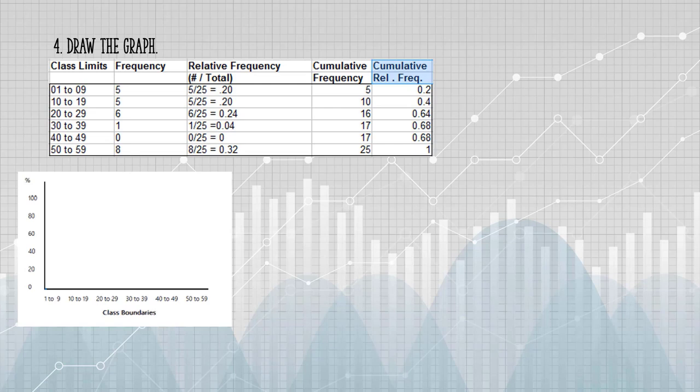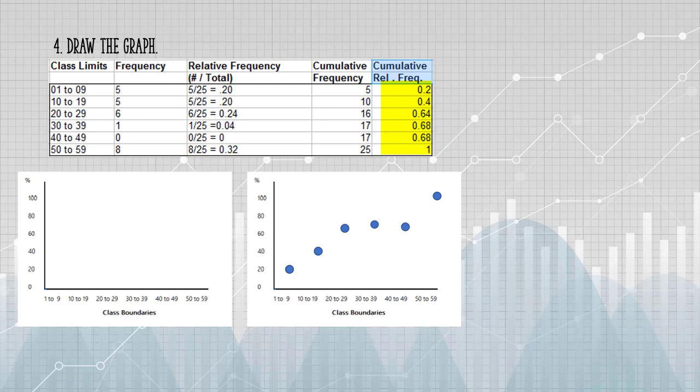Now I can plot my points. I'm plotting my cumulative relative frequencies. Each point should be plotted on the upper limit of the class boundary. For example, my first class boundary is 1 to 9, so my point is going to be placed at 9. If we were drawing a histogram, we'd put a rectangle here.